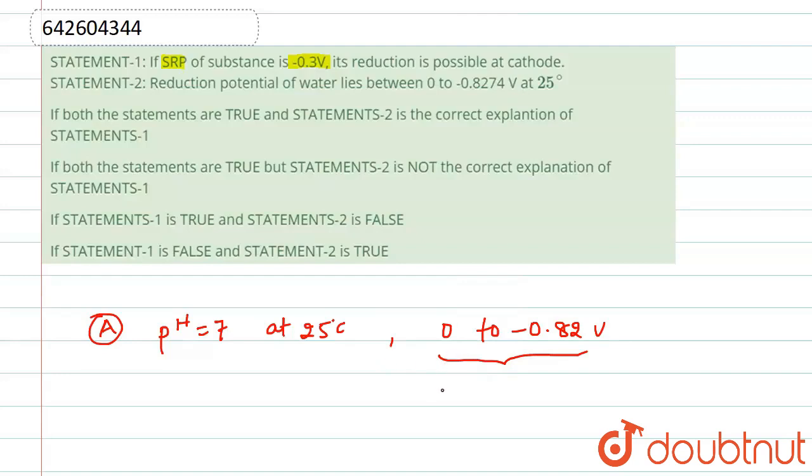So from here we can say that it will be in basic medium at cathode. This is happening at cathode with standard reduction potential, so statement 1 is correct.